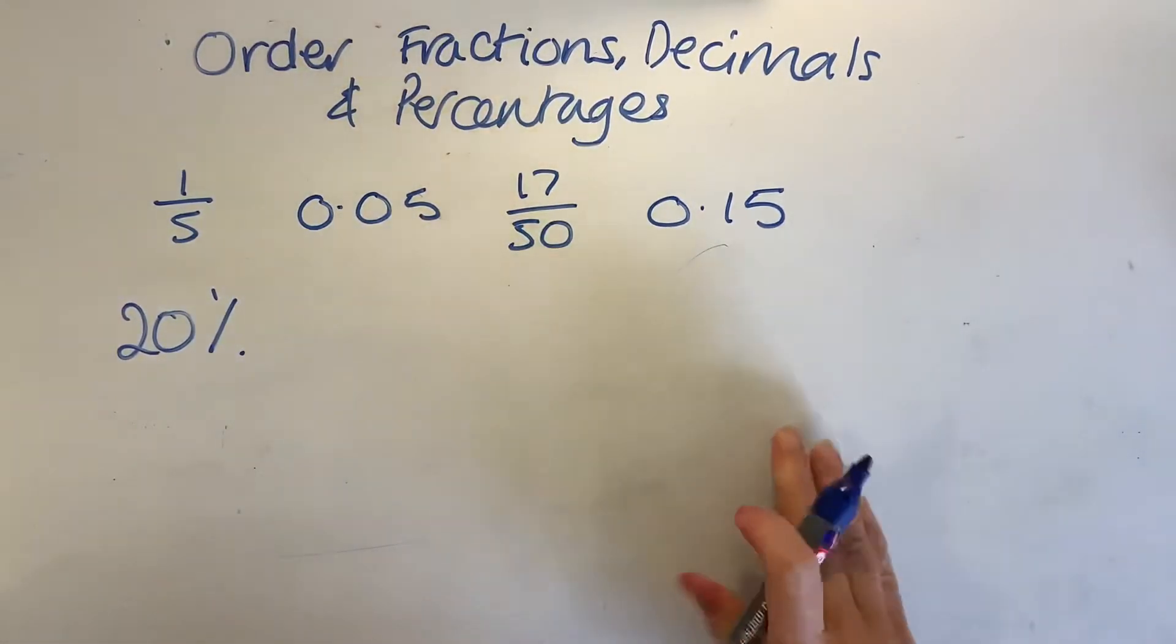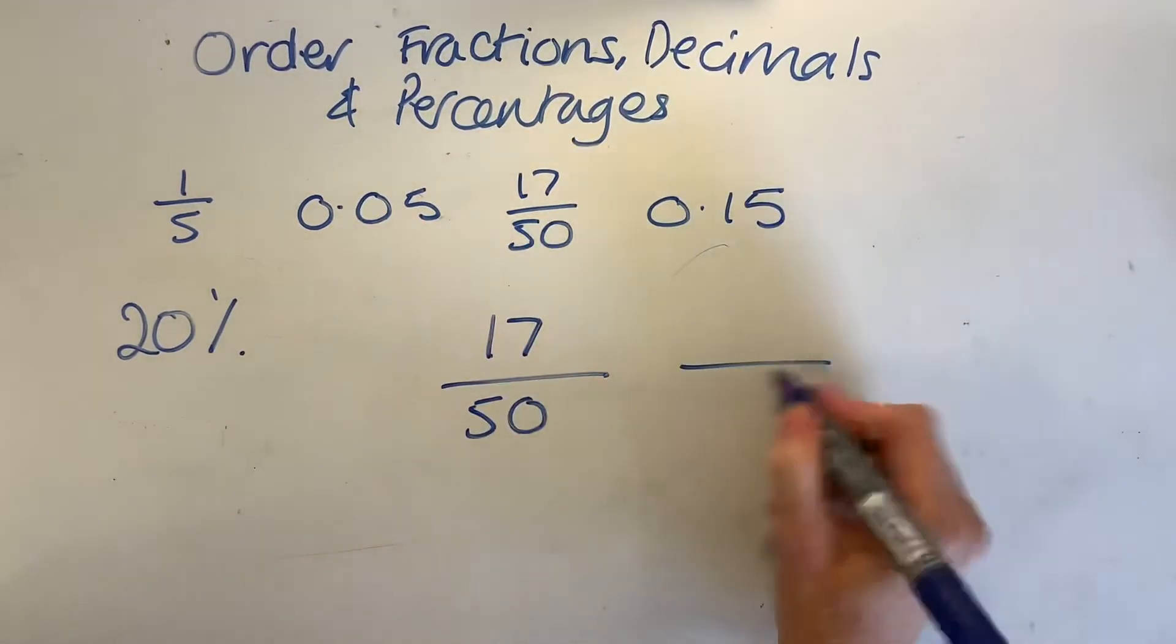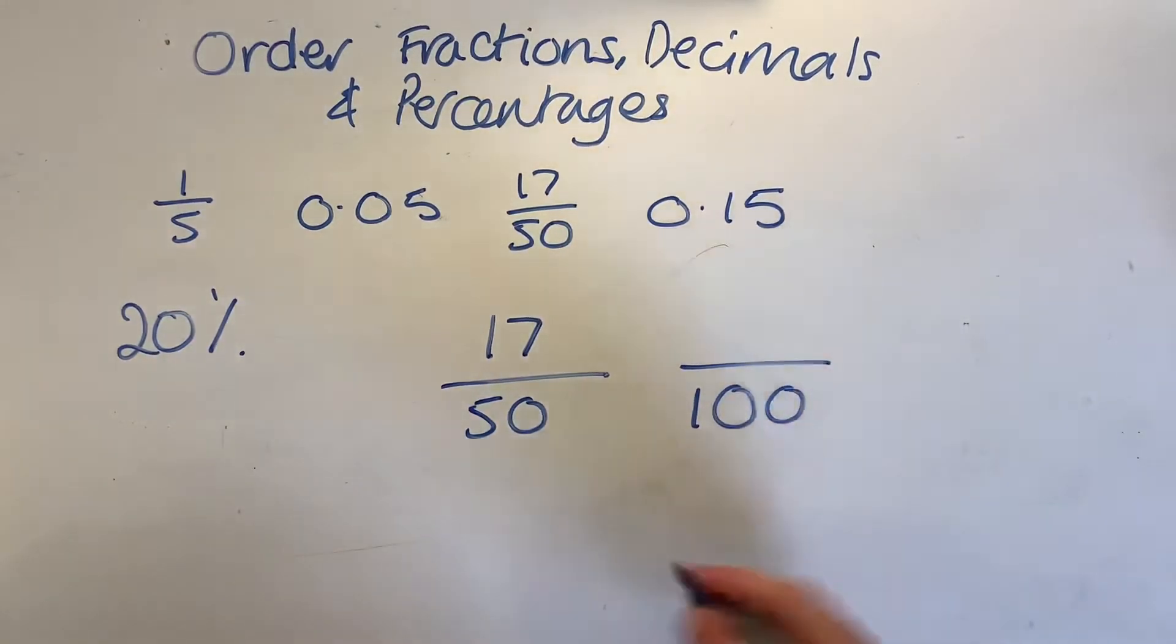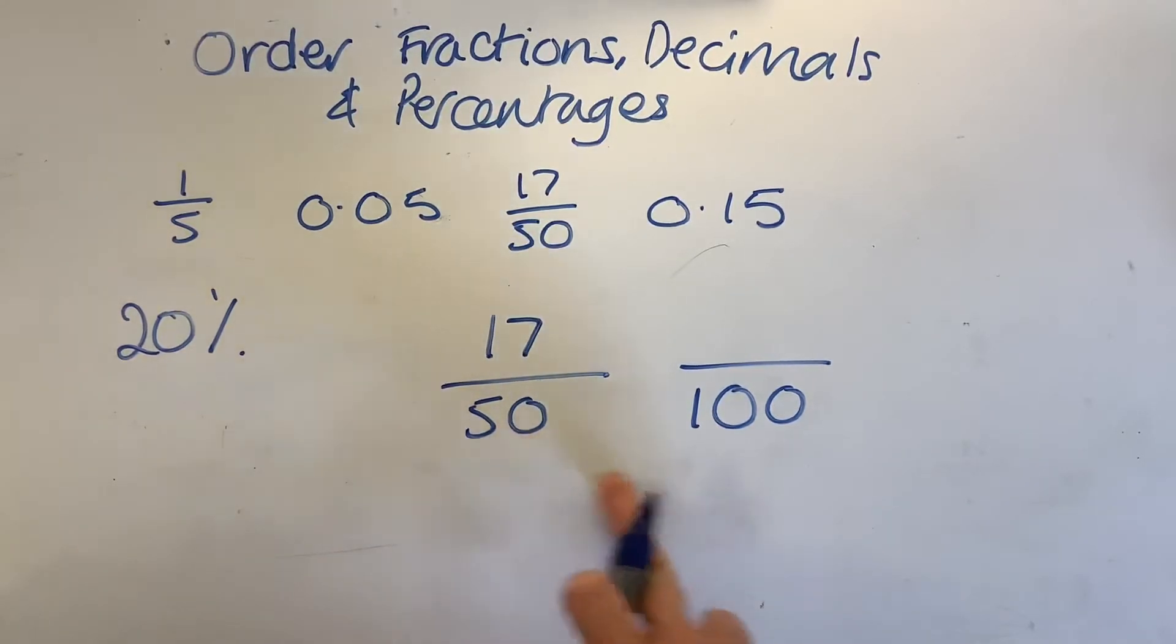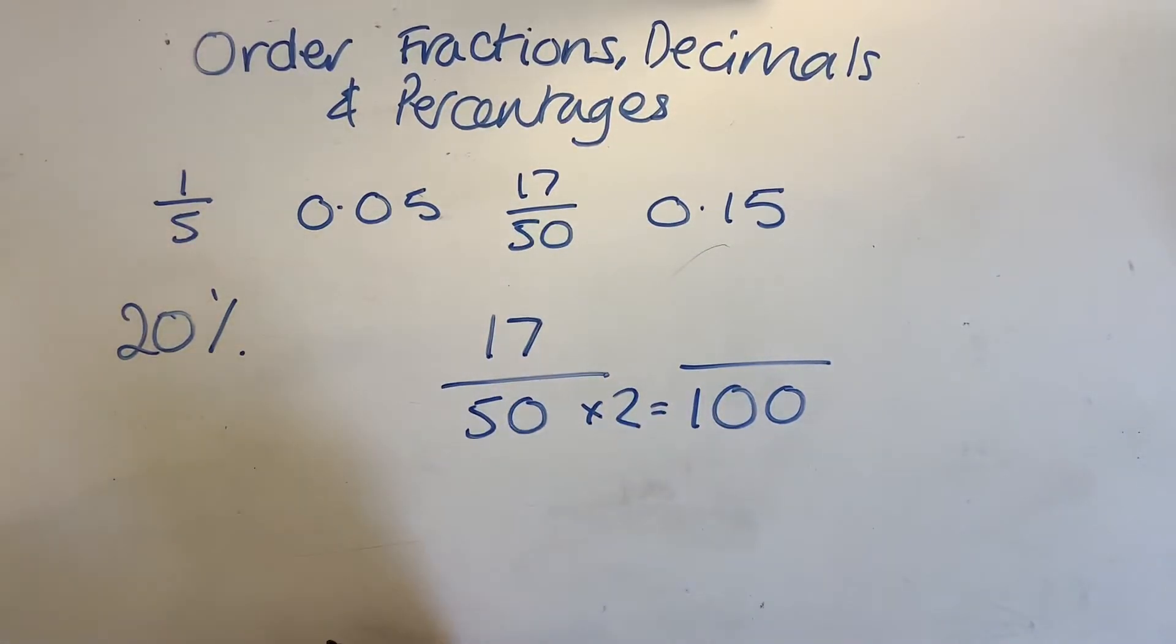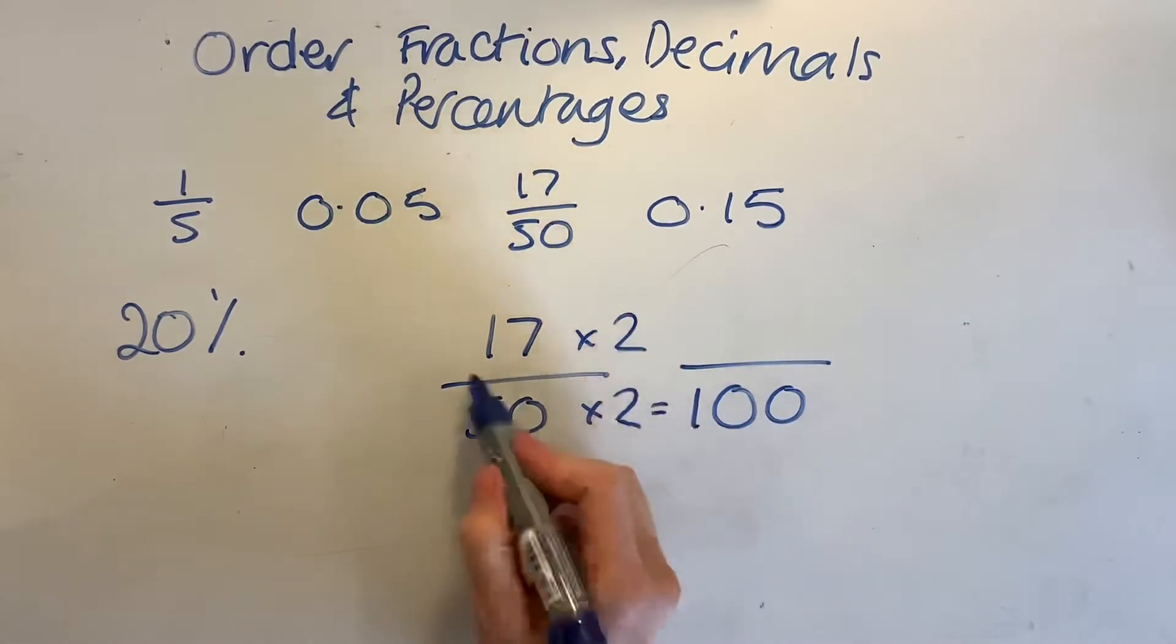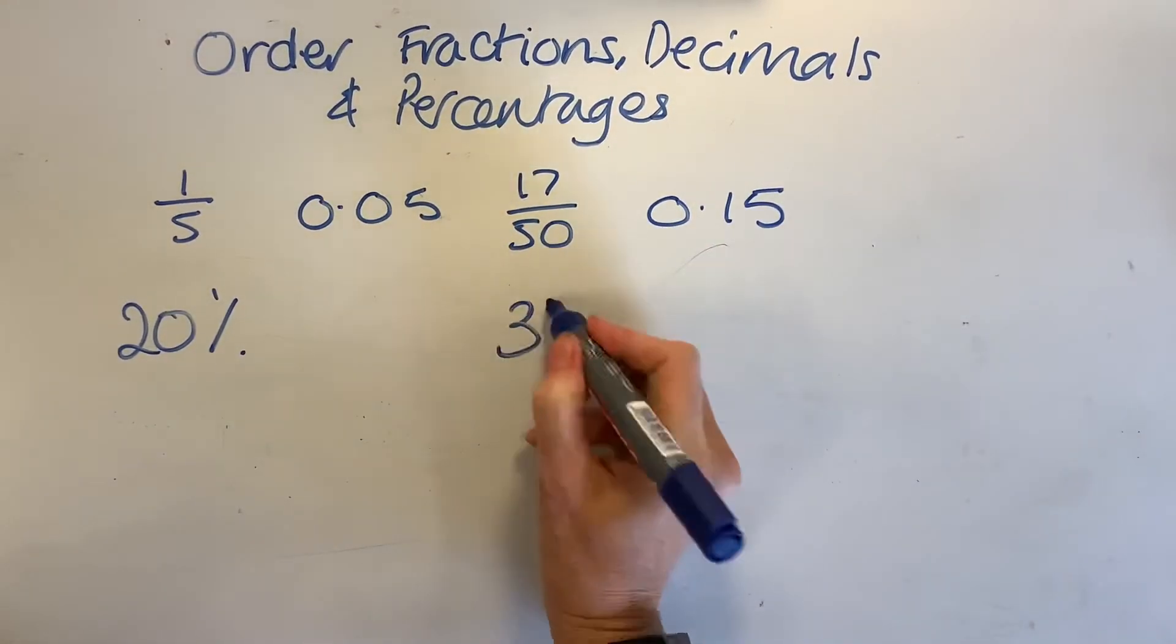Then I'm going to convert this 17/50. So I'm going to show you a different method for this. 17/50. I'm going to put it into a different fraction first. So if you've got a fraction that's got a bottom number that goes into a hundred nice and easily, this is a great method. So how many fifties are in a hundred? And that's two. So we know that 50 times two would equal a hundred. So I have to do the same to the top as well. 17 times two is 34. Now 34 over a hundred, hopefully you know that that means 34%. So what have we got here? We've got 34%.